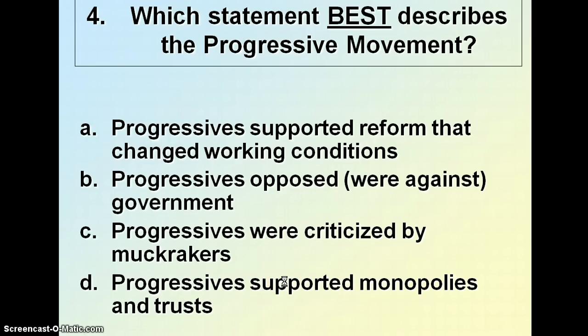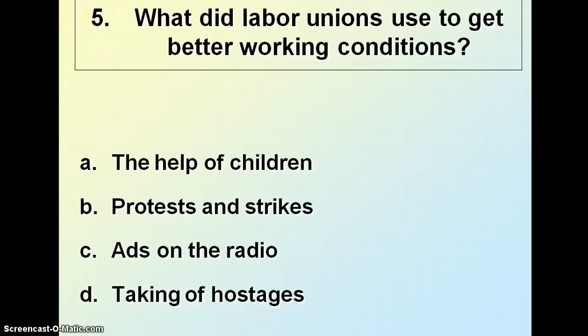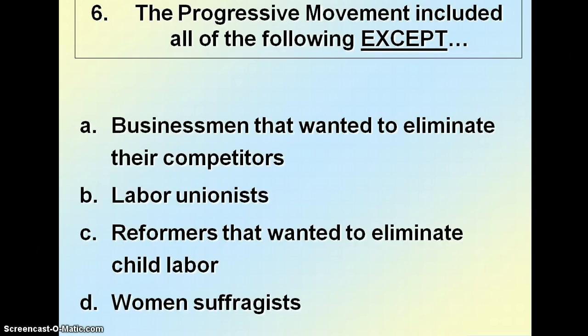Question four: which statement best describes the progressive movement? A, progressives supported reform that changed working conditions; B, progressives opposed government; C, progressives were criticized by muckrakers; or D, progressives supported monopolies and trusts. Question five: what did labor unions use to get better working conditions — the help of children, protests and strikes, ads on the radio, or the taking of hostages? Question six: the progressive movement included all of the following except — A, businessmen wanting to eliminate competitors; B, labor unionists; C, reformers wanting to eliminate child labor; or D, women's suffragists.